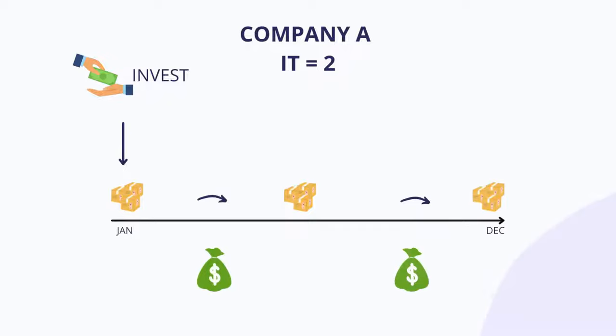But what does that exactly mean for the business? Let's say company A has invested an initial amount to buy inventory at the beginning of the year. During the year the company sold this inventory entirely, took the profit from those sales, and invested the product cost back into the business and sold it again and pocketed the profits one more time.